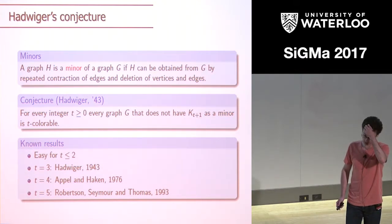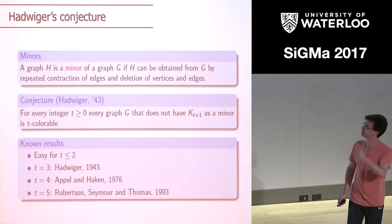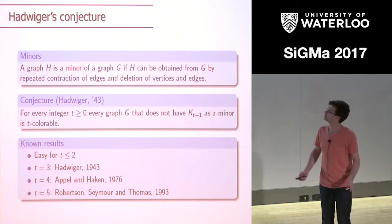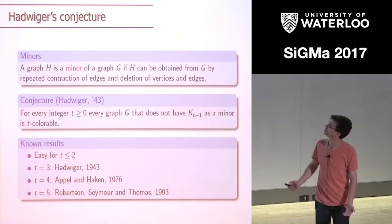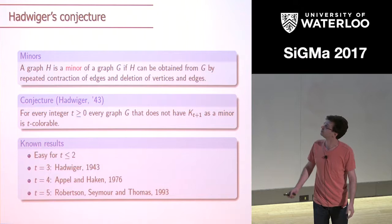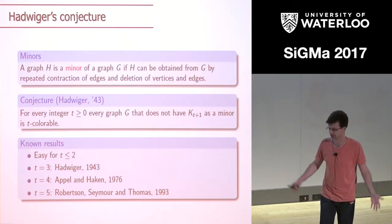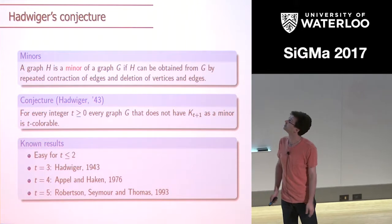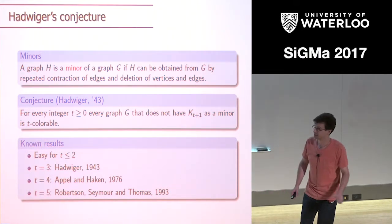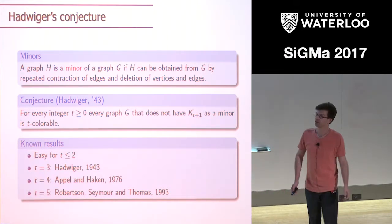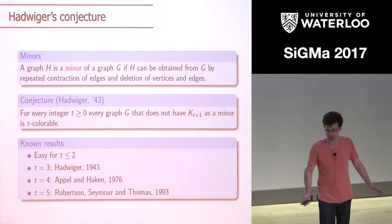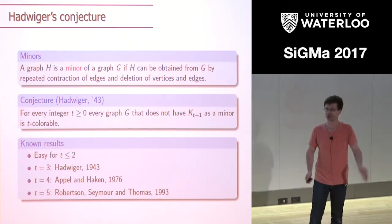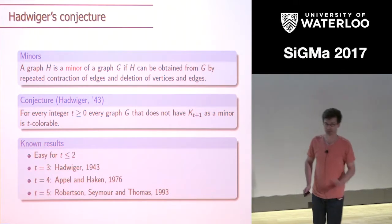So it's not known — even the next case would be a huge breakthrough. If somebody proves the conjecture, I think that would be the biggest result in graph theory, period. Of course, the conjecture could be false, but let's be optimistic for the duration of this talk.